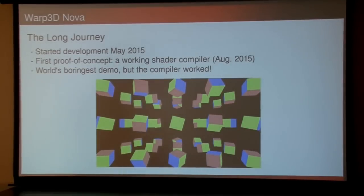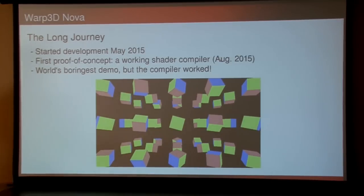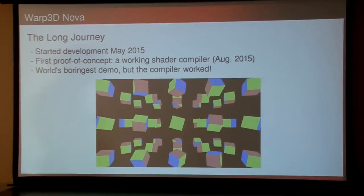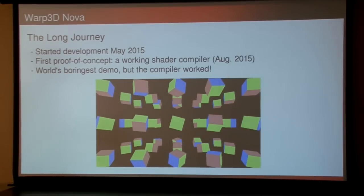When they asked me — when Aeon asked me to write Warp 3D Nova — the thing that worried me the most was that I have never written a compiler before in my life. So this is my proof of concept — the Boing World demo, a bunch of rotating cubes — but the big thing was the compiler worked. I could prove that I could write software, get the compiler to compile it to the GPU's assembly code, and then have it work. It took me a few months — I started development in May, got this up and running in August.